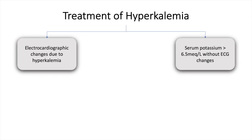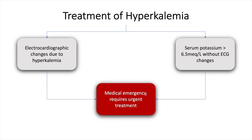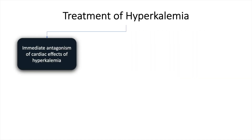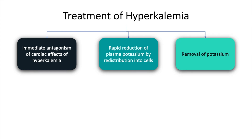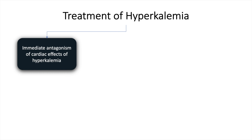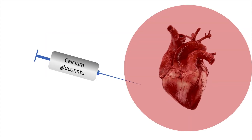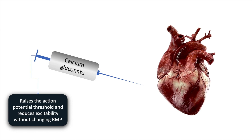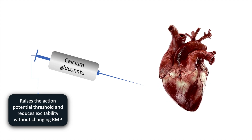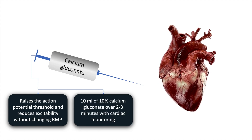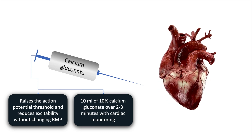Treatment of hyperkalemia must be considered when there are electrocardiographic changes or the serum potassium is more than 6 to 6.5 without ECG changes — both are medical emergencies requiring urgent treatment. Treatment is aimed at immediate antagonism of cardiac effects, rapid reduction of plasma potassium by redistribution into cells, and removal of potassium. Immediate antagonism of cardiac effects is achieved with calcium gluconate, which raises the action potential threshold and reduces excitability without changing the resting membrane potential. Ten ml of 10% calcium gluconate over 2-3 minutes with cardiac monitoring is the treatment of choice.